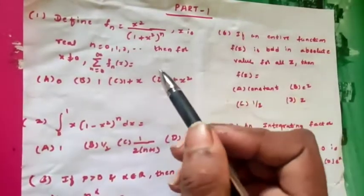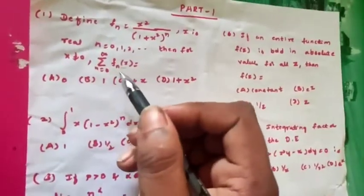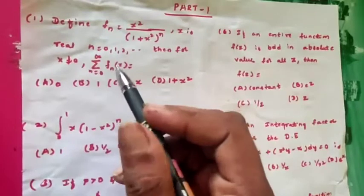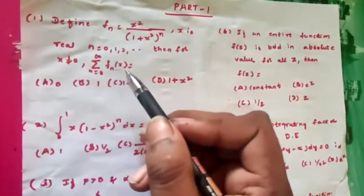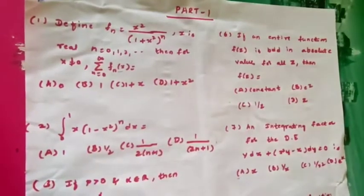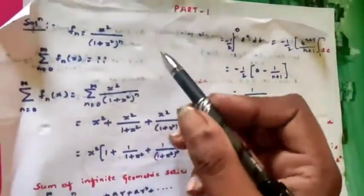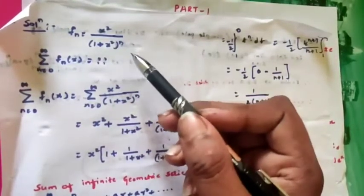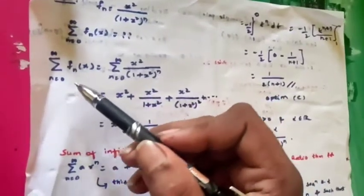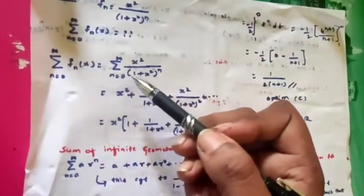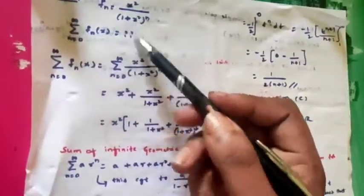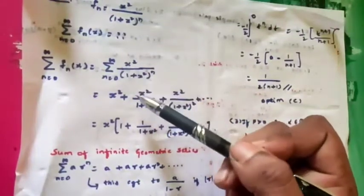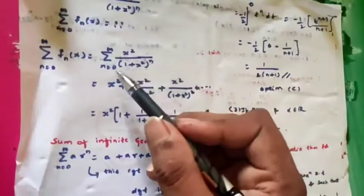First, if any series problem is given and we have to find the converging value, we have to expand the given series first. The solution: f_n(x) = (x²/(1+x²))^n and summation n = 0 to infinity of f_n(x). In place of f(x) we put the value (x²/(1+x²))^n and expand this.